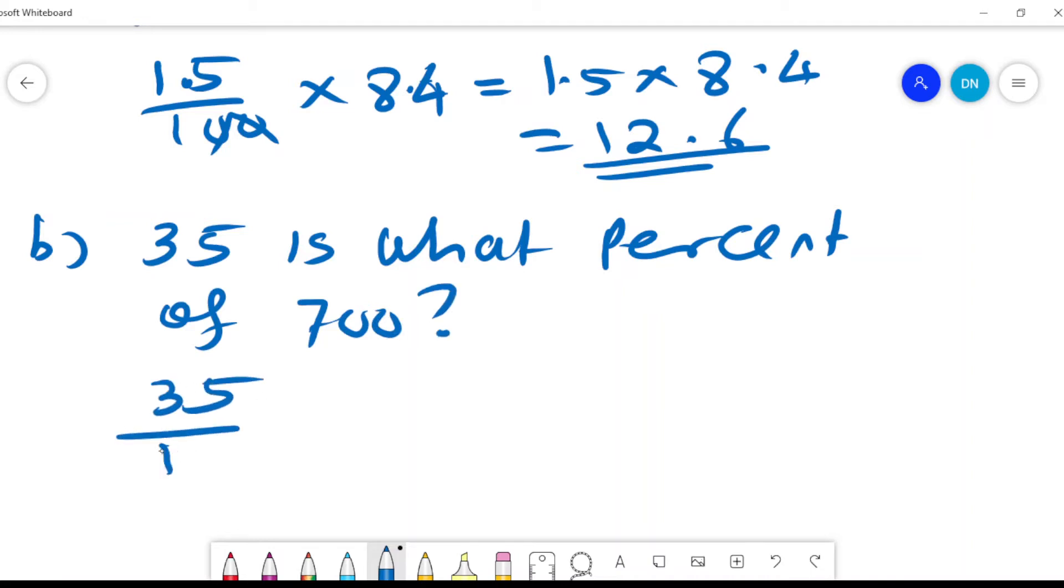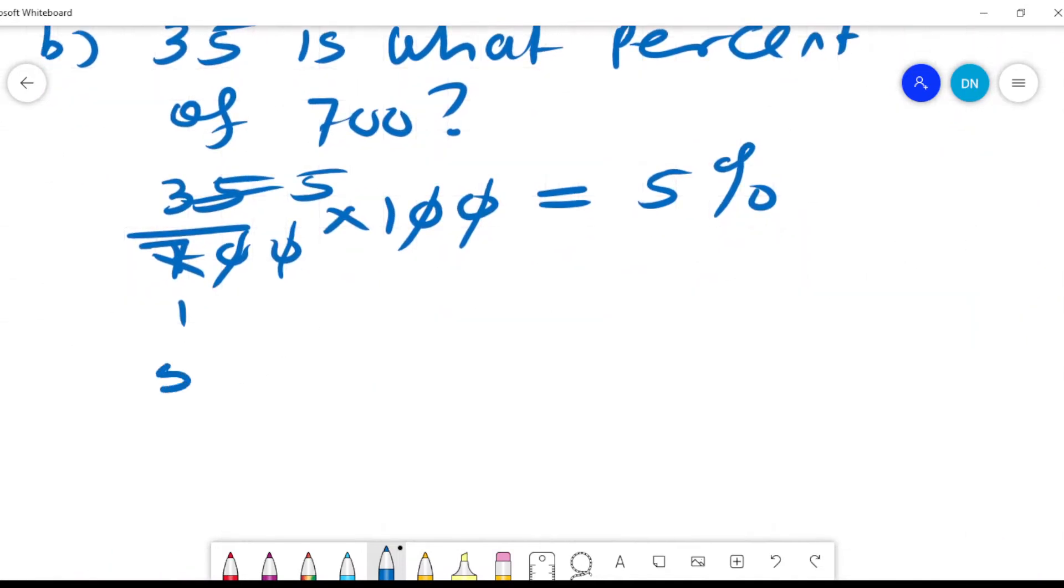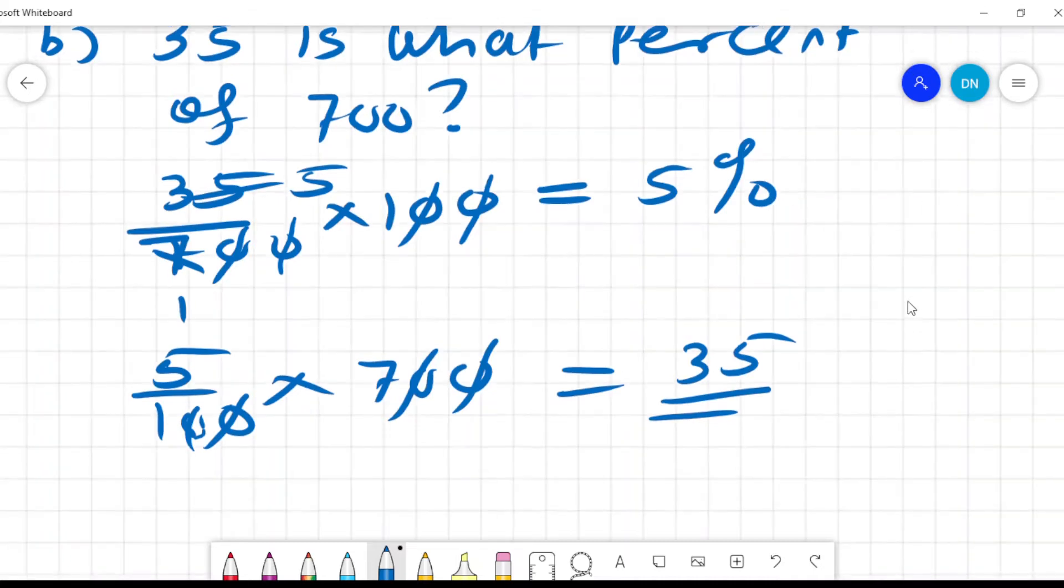How did I get 5%? That cancels that, and this is 1 and that is 5. So that 5 is 5% of 700. What we mean is 5 over 100 of 700 will basically be equal to that 5. And I think that makes it clear for us.